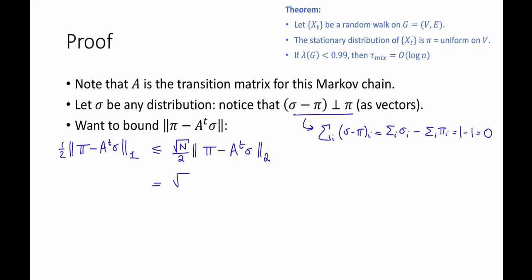And using the fact that pi is an eigenvector for A with eigenvalue 1, this is equal to square root of n over 2 times the L2 norm of A to the t times pi minus sigma.